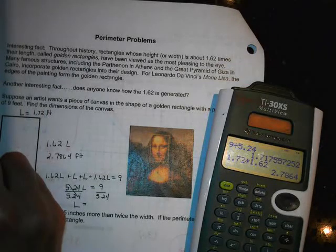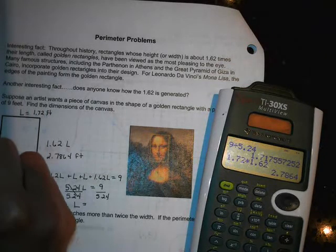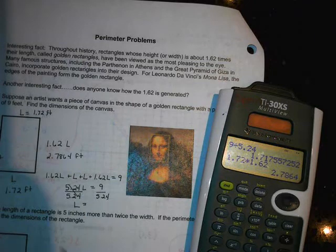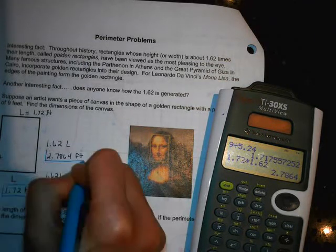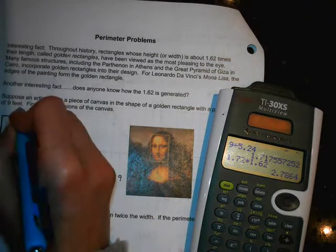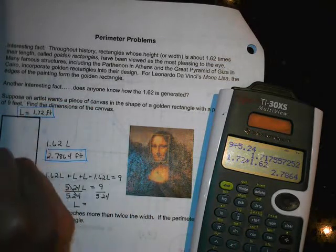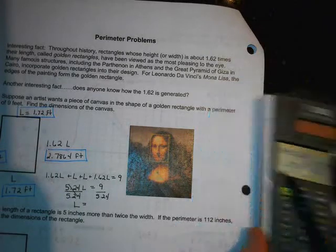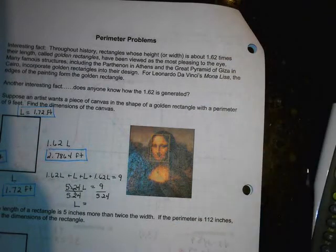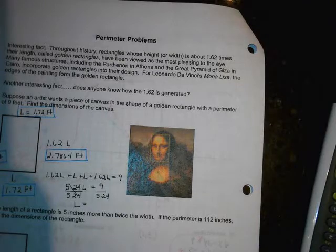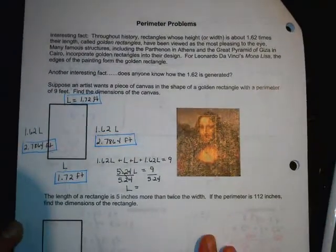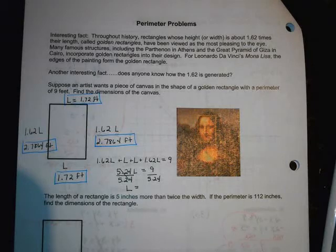So 2.7864 feet. Just look at MyMathLab, they'll tell you what they want it to be rounded to, whether it's 1 decimal or 2 or 3. So that would be the dimensions of the canvas. So if they're asking you about a golden rectangle problem, you can look it up, look up in your notes. All right, the other one is just another perimeter problem.